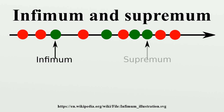Formal definition: A lower bound of a subset S of a partially ordered set P is an element R of P such that R ≤ X for all X in S. A lower bound R of S is called an infimum of S if for all lower bounds Y of S in P, Y ≤ R. Similarly, an upper bound of a subset S of a partially ordered set P is an element B of P such that B ≥ X for all X in S. An upper bound B of S is called a supremum of S if for all upper bounds Z of S in P, Z ≥ B.